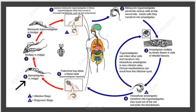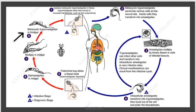The trypomastigotes in the gut of the bug are converted into epimastigotes, which multiply in the midgut and then are converted back into trypomastigotes in the hindgut — which are again deposited into the host with the next bite. And the cycle is repeated all over again.